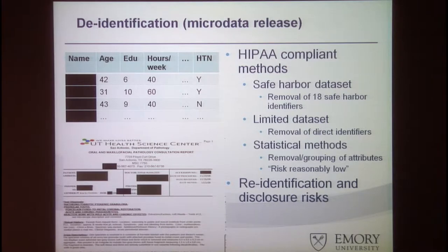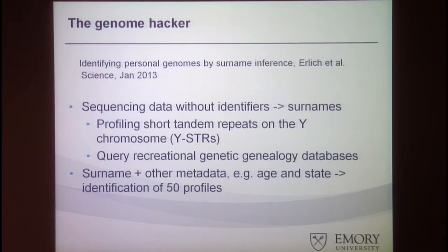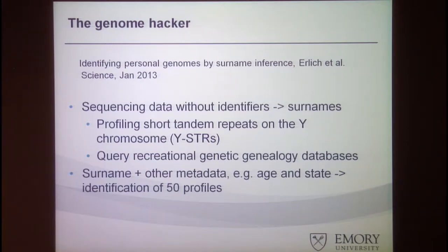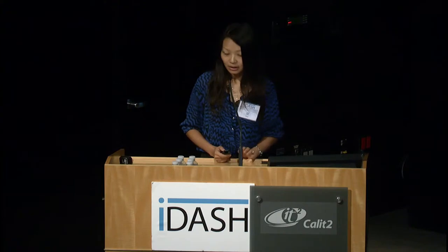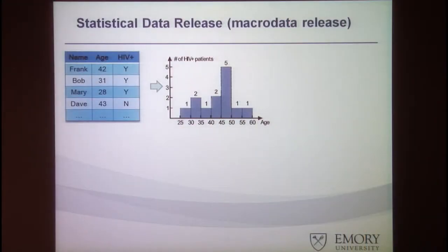However, as has been shown by many works, these microdata release or de-identification approaches are subject to many re-identification or disclosure risks, because seemingly de-identified data can be joined with external information, such as registry data, to re-identify people. A more recent example was shown in a Science article this year. By taking genome data from the 1000 Genome Project, researchers profiled short tandem repeats on the Y chromosomes, then queried recreational genealogy databases, which allowed them to recover surnames, because people inherit their Y chromosomes from their father. By combining the surname with other metadata such as age and state, they were able to identify 50 profiles from the Genome Project.